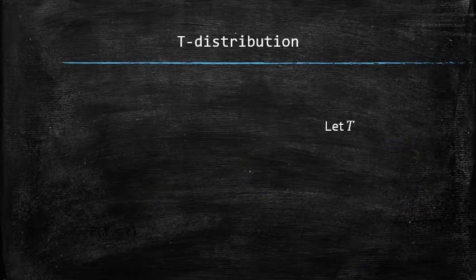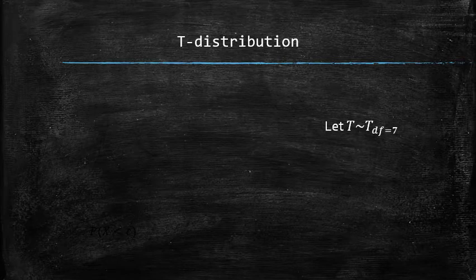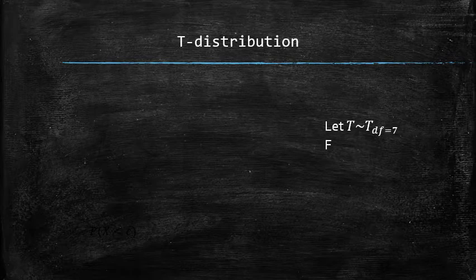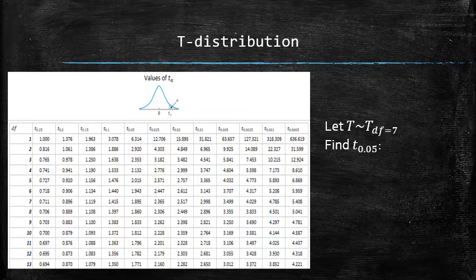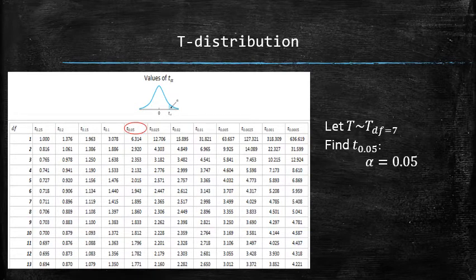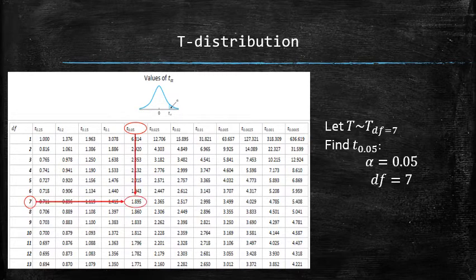Let t be a random variable that has t-distribution with seven degrees of freedom, and let's find t sub 0.05. The most frequently used t-alphas are summarized in the following table. We need to identify alpha, which is 0.05, and the degrees of freedom, which is seven. Then look for the value in the intersection, which is our desired t sub 0.05.